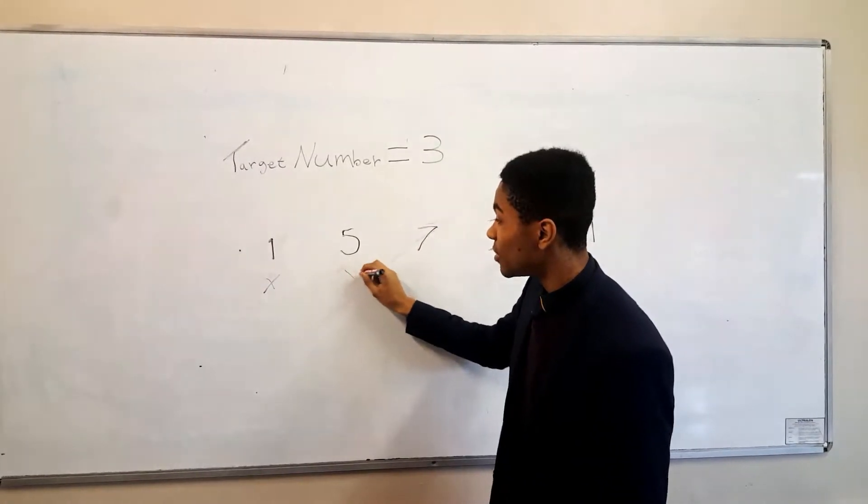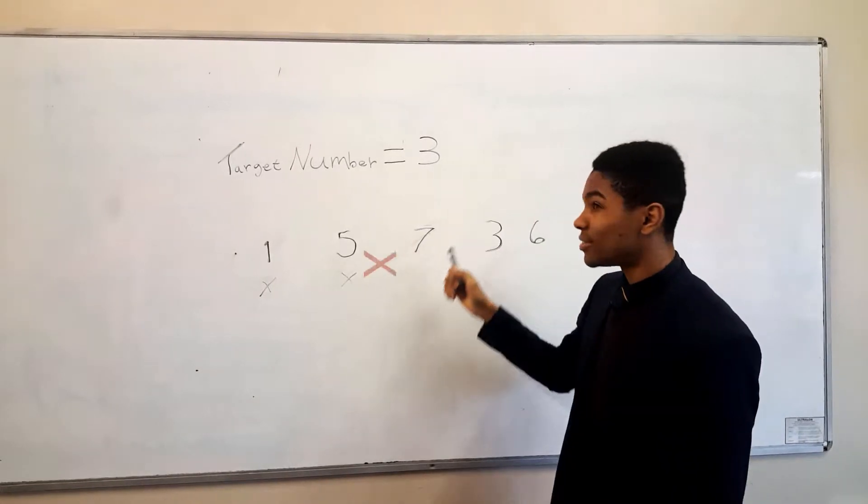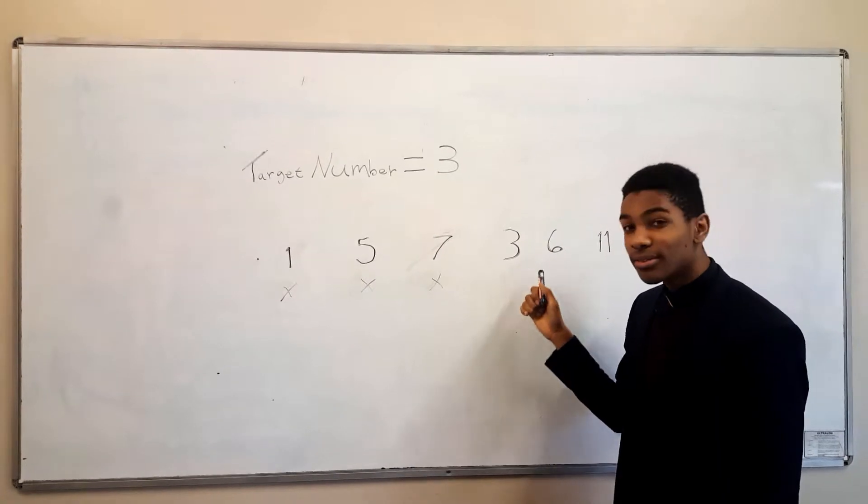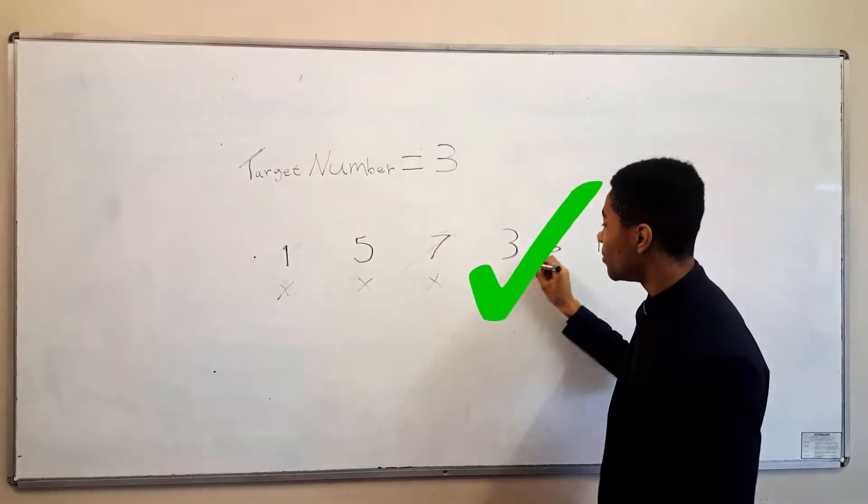3 is not equal to 5 so we move to the next index. 3 is not equal to 7 so we move to the next index. And then we see here, 3 is equal to 3 and therefore we have found our number.